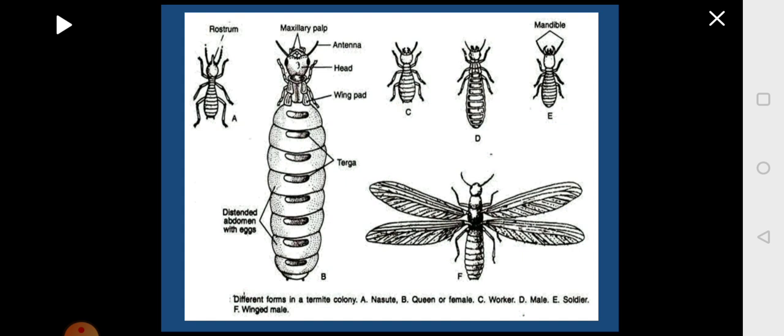In this diagram, you can see different members of a termite colony. Form A is a nasute soldier with a well-developed rostrum on the head region — the fluid ejected keeps predators away. Form B is the queen, the biggest in size, bearing the head with maxillary palp and antenna, with wings dropped off and the abdomen greatly distended where eggs are stored. C is the worker, the smallest member. D is the king. E is a mandibulate soldier, and F is the winged male going out for flight.